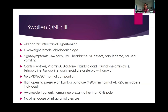For IIH workup, you should do an MRI, MRV, and CSF normal composition. A lumbar puncture is needed — anything above 200 mmH₂O is considered high opening pressure for a normal weight individual, and anything greater than 250 mmH₂O for an obese individual. Most importantly, the patient must be awake and alert with an otherwise normal neuro-ophthalmic exam other than CN6 palsy, and there should not be any other cause of intracranial pressure.